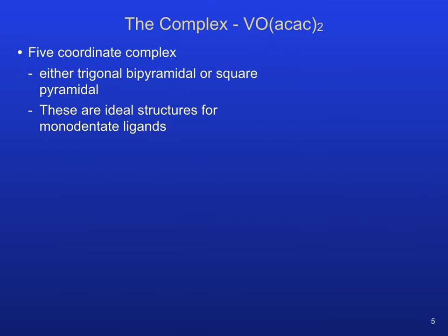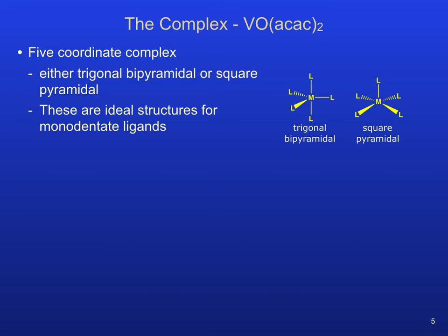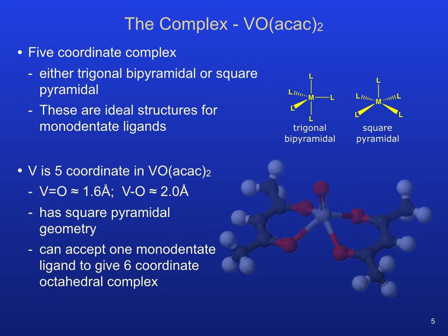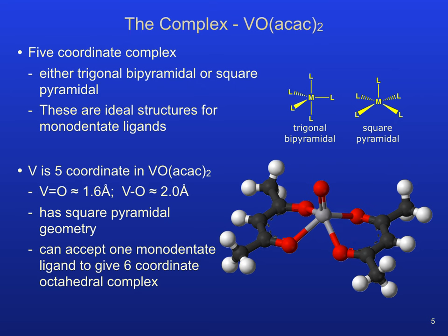VO-bis-ac-ac is a five-coordinate transition metal complex. Two structural geometries that have five bonded electron pairs surrounding a central atom are trigonal bipyramidal and square pyramidal. The structure of the VO-bis-ac-ac complex is square pyramidal. There are two distinct vanadium-oxygen bond lengths in this complex; the axial V=O bond length is much shorter than the V-O bonds involving the ac-ac ligands.